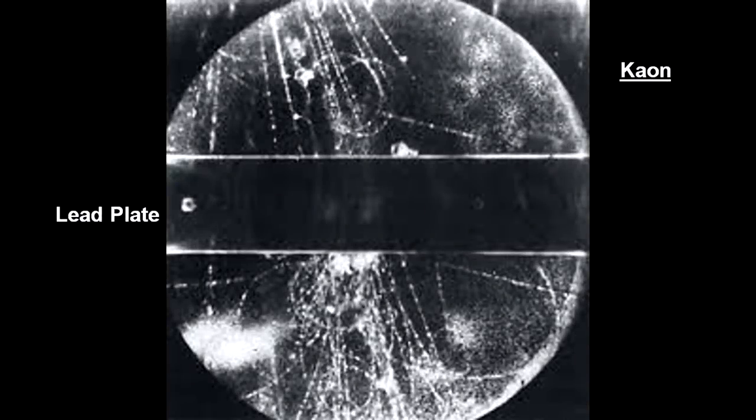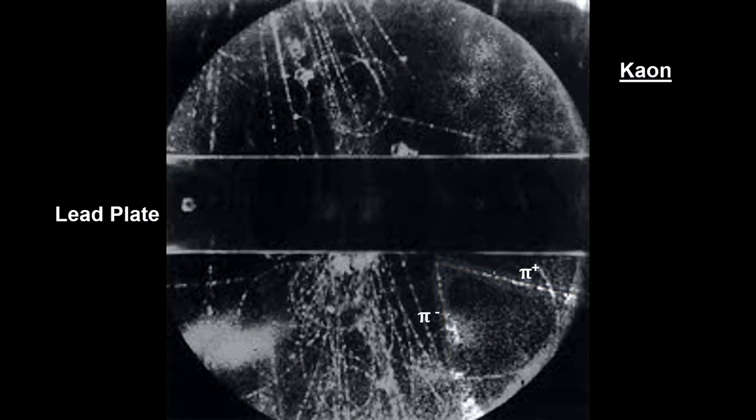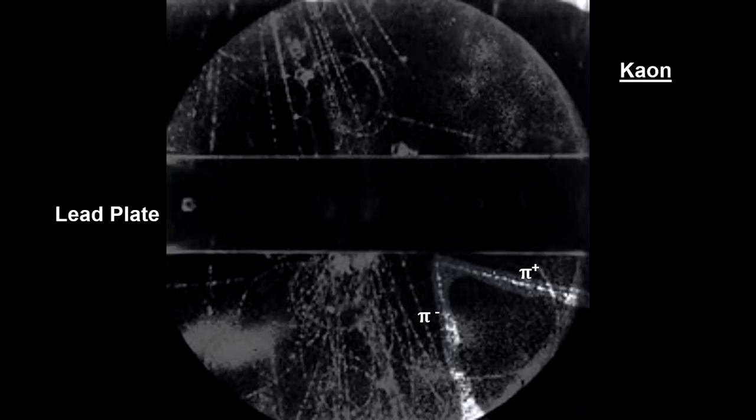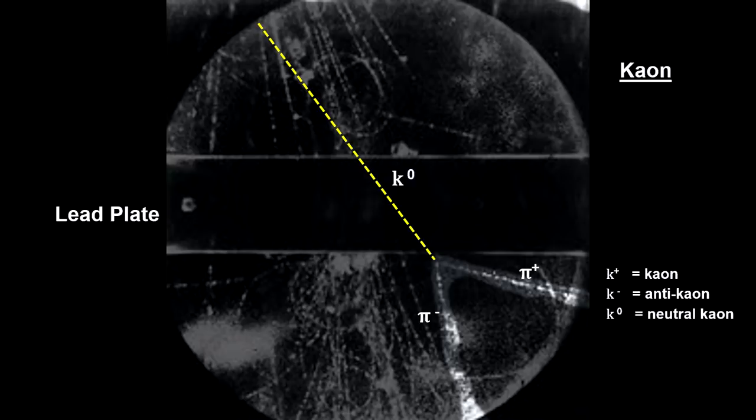Also in 1947, another particle called the kaon was discovered by George Rochester and Clifford Butler. They also used cosmic rays. Here's a look at their bubble chamber picture. Just below the lead plate, in the lower right-hand quadrant, you see an inverted V that extends to the lower right. Measuring the momentum and charges, they determined that they were a pion and an anti-pion. Rochester and Butler concluded that this event had to be a photographic record of a novel phenomenon, the decay of a previously unknown neutral heavy particle, later called the kaon. The discovery of kaons represented the first time we deduced the existence of a particle from its decay components.